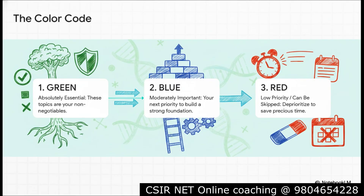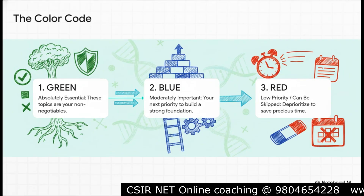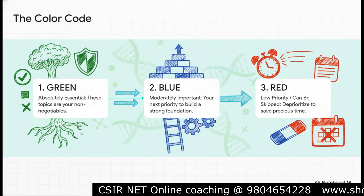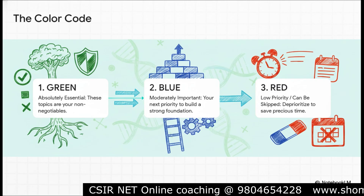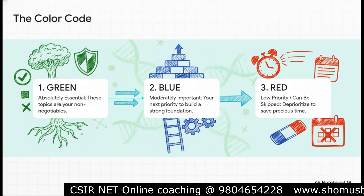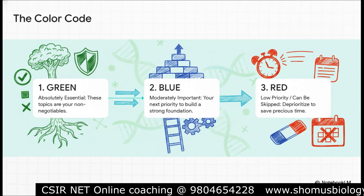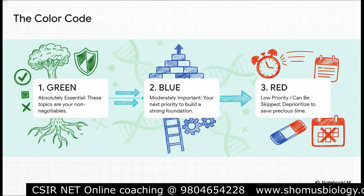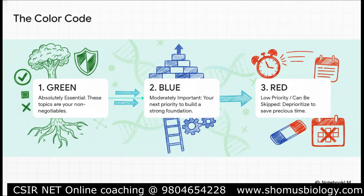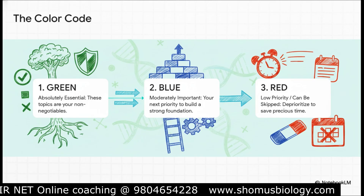It's a simple but really powerful color code. Green topics are your non-negotiables — you just have to do them. Blue topics are what you tackle next to build on that strong foundation. And the red topics? Those are the ones you can basically give yourself permission to deprioritize to save your precious time. We're going to filter the whole syllabus through this lens.